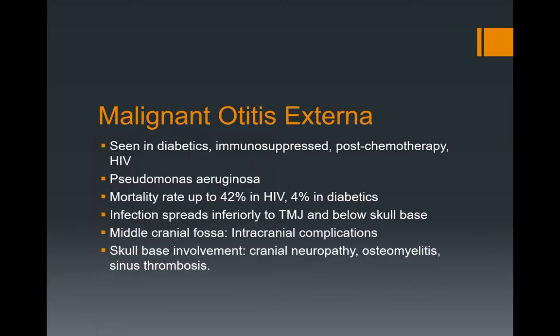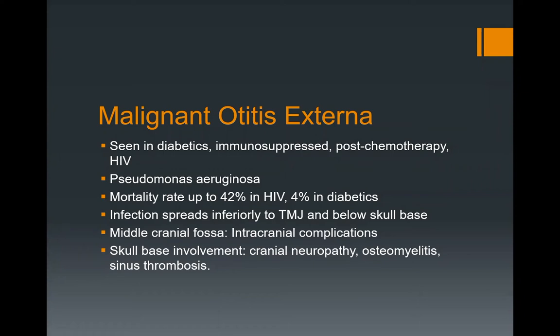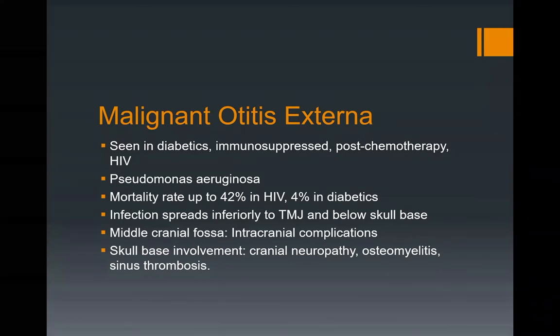Malignant otitis externa is seen in diabetics, patients who are immunosuppressed, patients on chemotherapy, and those with HIV. The most common organism is Pseudomonas. There's a high mortality rate — 42% in patients with HIV and 4% in diabetics. Also called necrotizing otitis externa, the infection spreads inferiorly to the temporomandibular joint or below the skull base because of thrombophlebitis of the draining veins of the EAC, which extend through the fissures of Santorini.